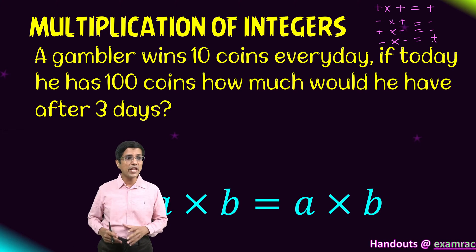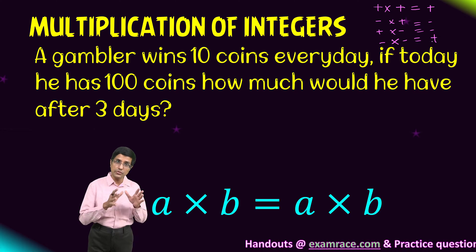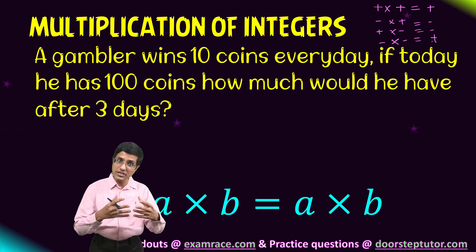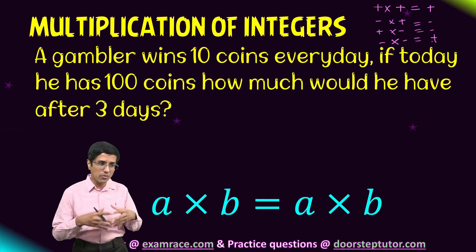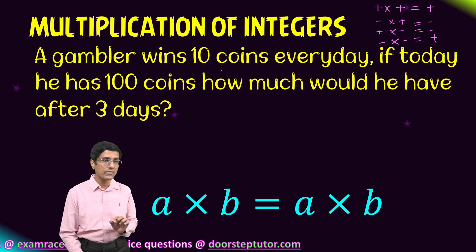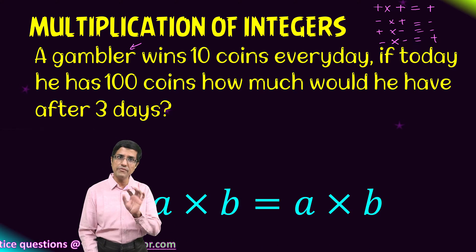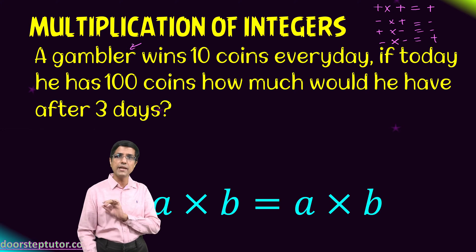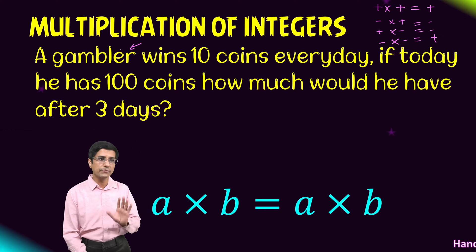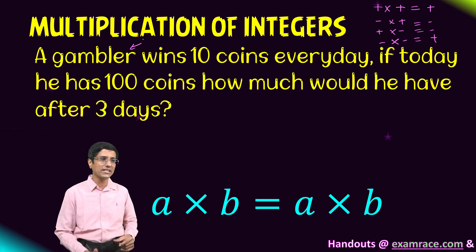So we are taking a real world example to show that this kind of arithmetic makes sense. Here we have a gambler — and by the way, you should never gamble in your life; it is a very dangerous habit, not in games, not on the internet, never in your life. But here we will take a very simple example just to illustrate these rules.